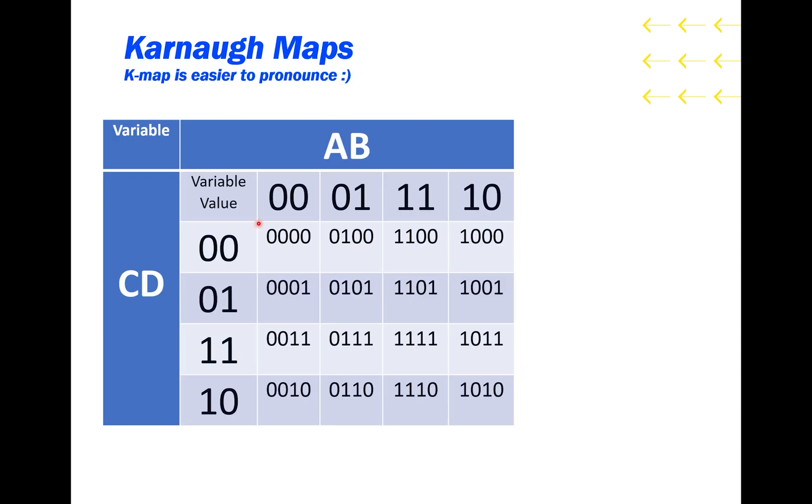And that's where K-maps come in. I'll get more into reading these on the next slide, but for now, recognize that this grid here of tiles has all the different combinations of inputs. And that each combination tile is connected to other tiles that differ by only one variable. This will help us simplify later.